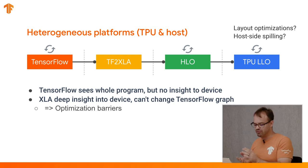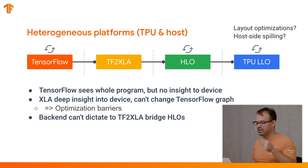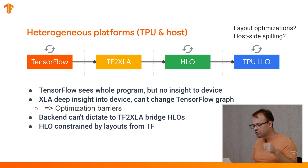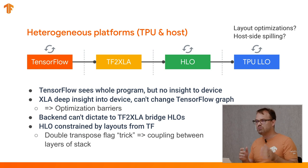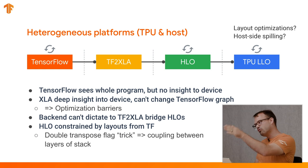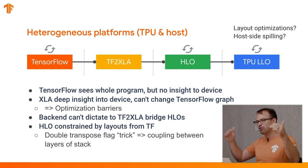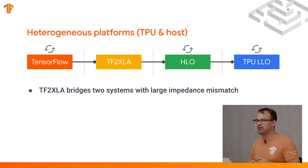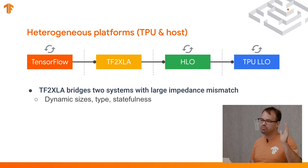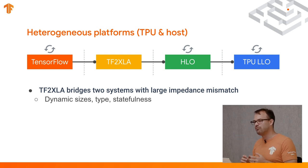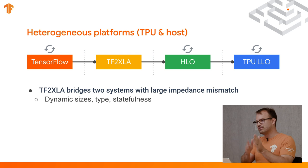This results in optimization barriers between the different passes. A backend can't dictate to the bridge which HLO to produce — the HLO produced is constrained by what is in TensorFlow. This leads to things such as the double transpose trick, which allows people to force certain layouts. But such operations actually create a coupling between the different layers, where the higher and lower level layers have implicit coupling with hard-coded assumptions. Beyond that, the TF-to-XLA bridge is bridging two different systems with a large impedance mismatch.